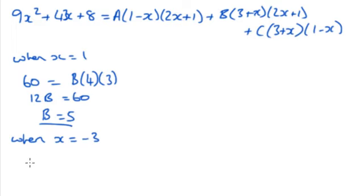Which gives me -40. So -40 is equal to the A bracket: that's 1 minus -3 is positive 4, and -6 + 1 is -5. So -40 equals -20A, A must be 2.